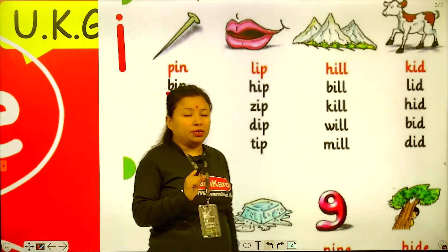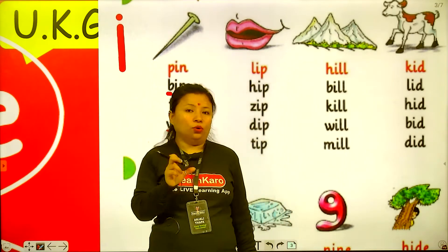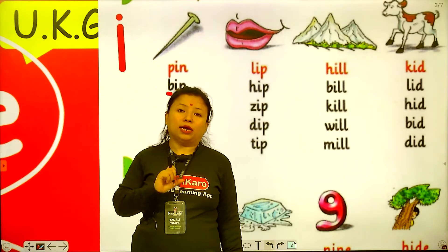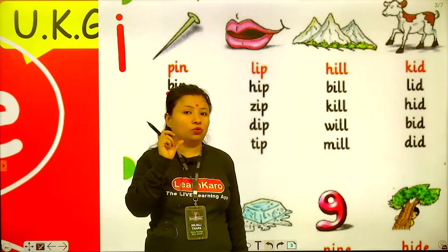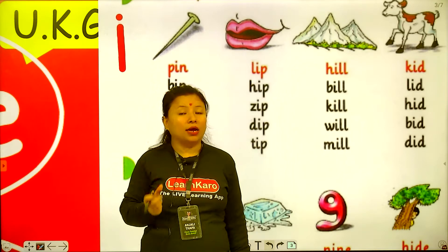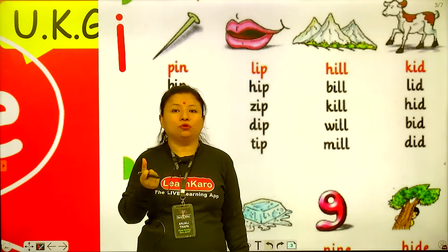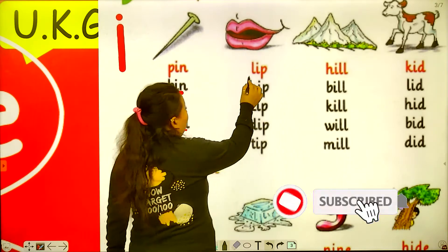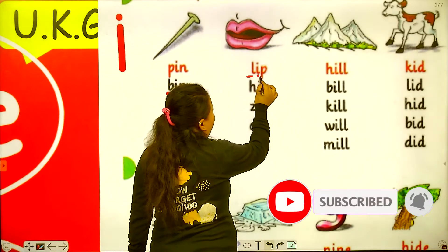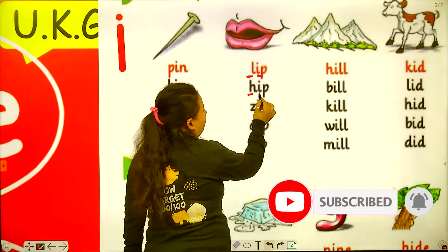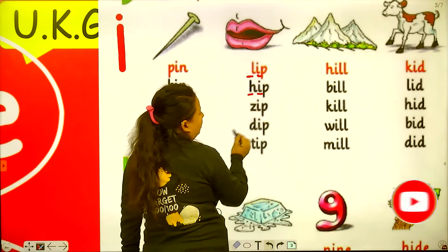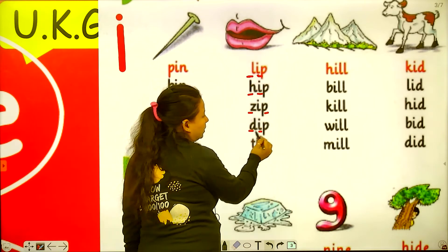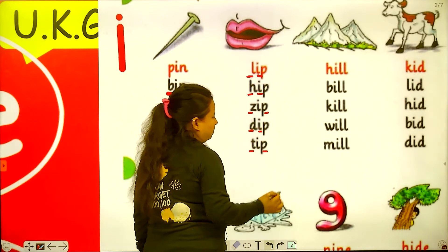Sometimes we pronounce I as E, and sometimes we pronounce I as I. So L-I-P: lip, hip, zip, dip, tip.